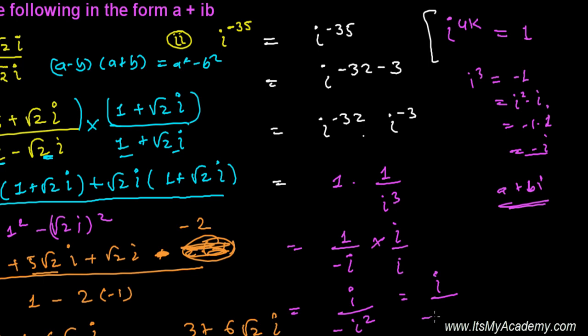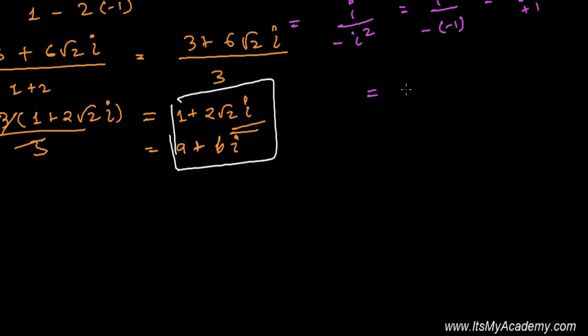You'll get i divided by -i². And i divided by -i² is minus times -1, which is plus 1. So i divided by plus 1 is simply i. You can write i as 0 + i times 1.